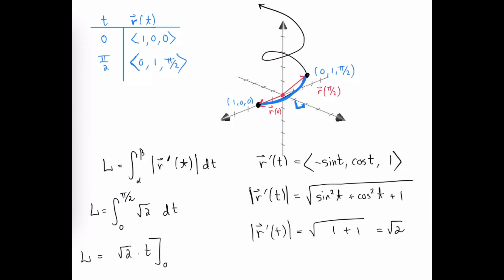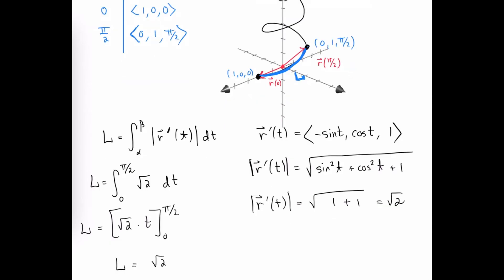So the arc length is going to be square root of 2 times t, and then we're going to apply the limits of integration to get square root 2 times the upper limit, which is π over 2, minus square root 2 times the lower limit, which is 0, and of course, this is just 0.